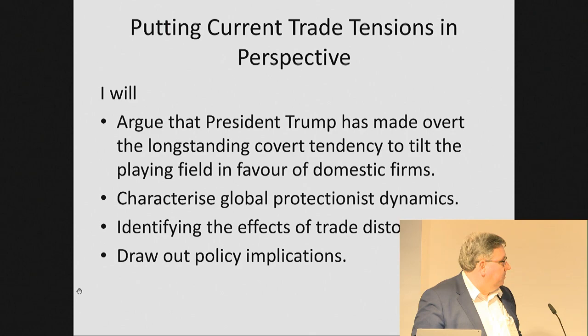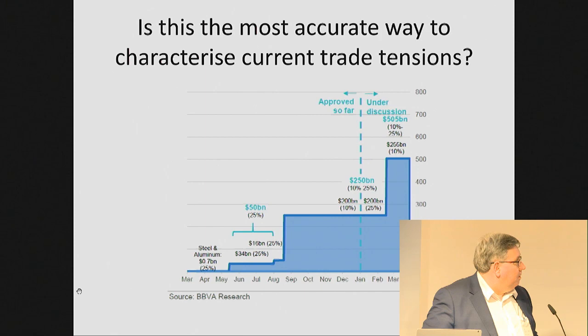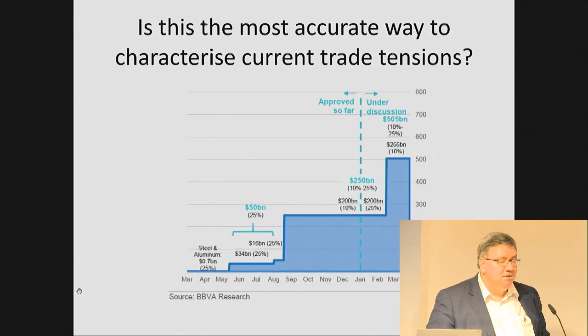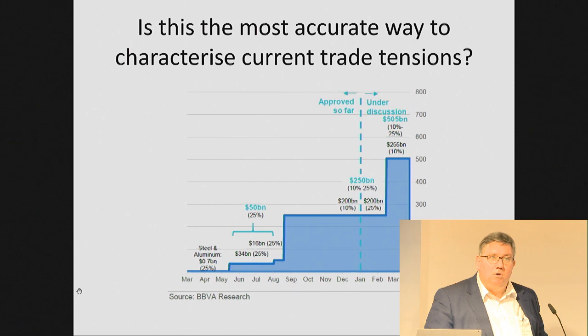Let's start with a provocative question. Is this the most accurate way to characterize the current trade tensions — that essentially it is a US phenomenon, it is a 2018 phenomenon, and it is targeted principally at China? The principal instrument is tariffs, and for many, the bilateral tariff war is the defining event, perhaps of the last 10 years in trade policy — it is when the wheels fell off the wagon. I want to challenge that view.